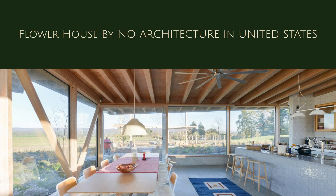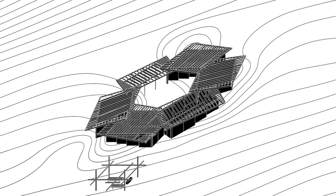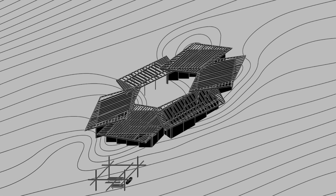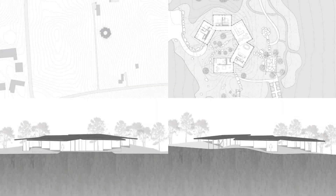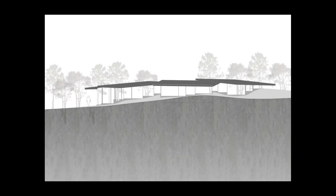Flower House by NO Architecture in United States. The project reinterprets and expands on the glass house typology through its dynamic relationship to the native landscape, and a plan configuration that organizes the six interlocking pavilions into petals around a central open courtyard.